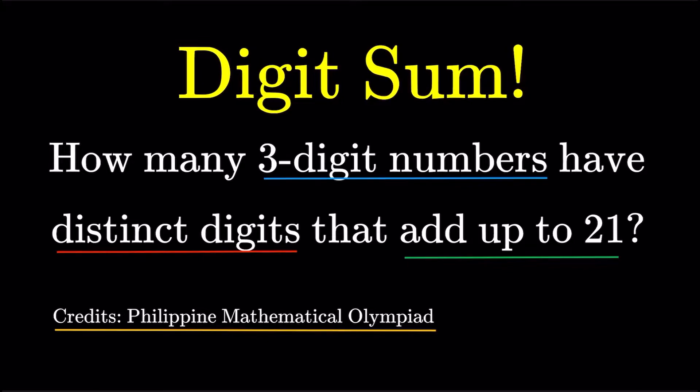As usual, pause this video if you'd like to give this item a try, but if you're done, let us dive into the solution. Alright, the question is that simple. We're just finding three-digit numbers with all digits different adding up to 21.